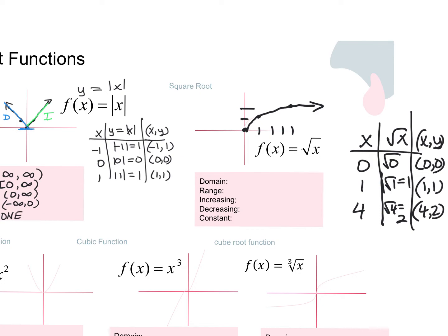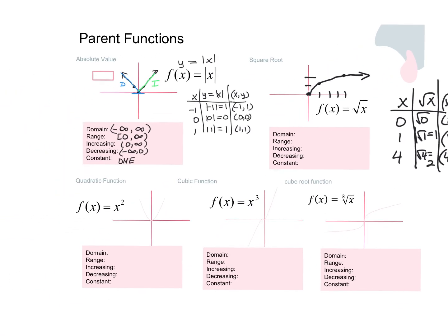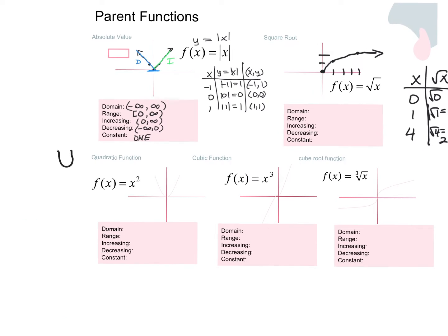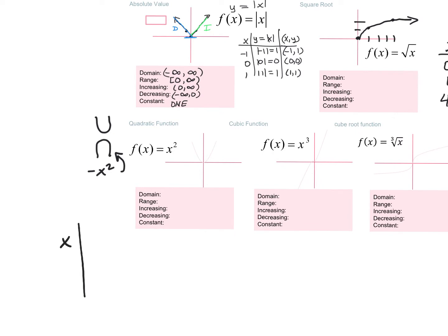For the quadratic, this is our parabola. When it's the x squared function, it's going to take on a U-shape or an upside-down U-shape. When the number in front of x squared is positive, the parabola smiles — it's a U. When it's negative, it's a frown — an upside-down U. I'm going to set up the table of values with x, y equals x squared, and ordered pairs. I didn't do increasing/decreasing for the square root yet — let me do that first before the quadratic.